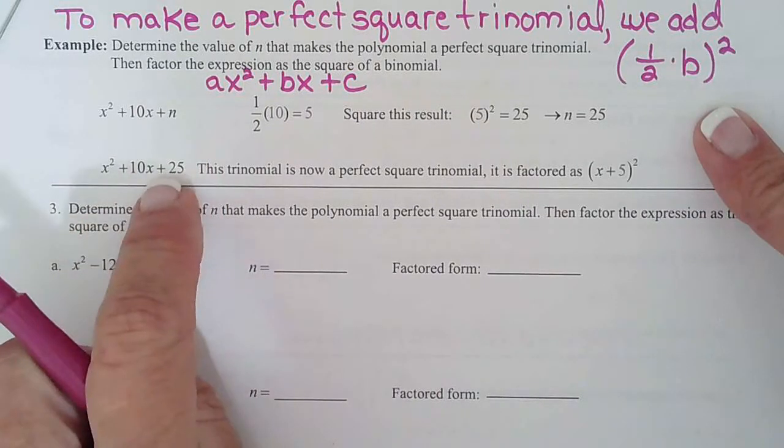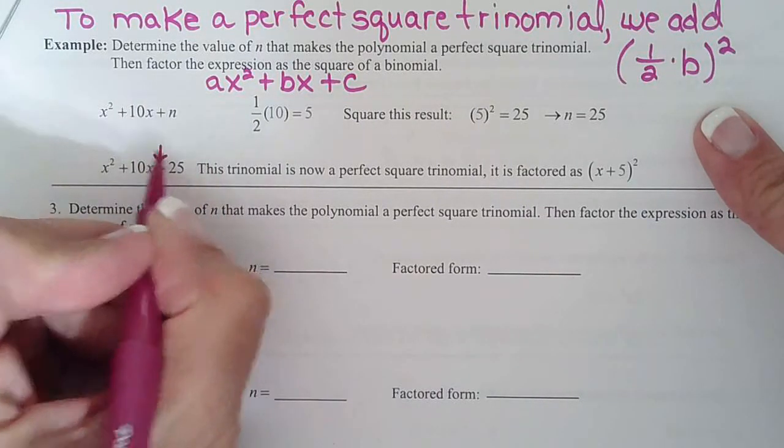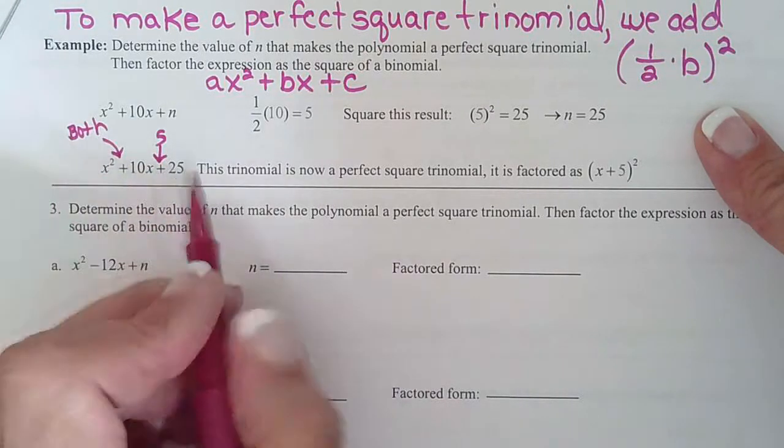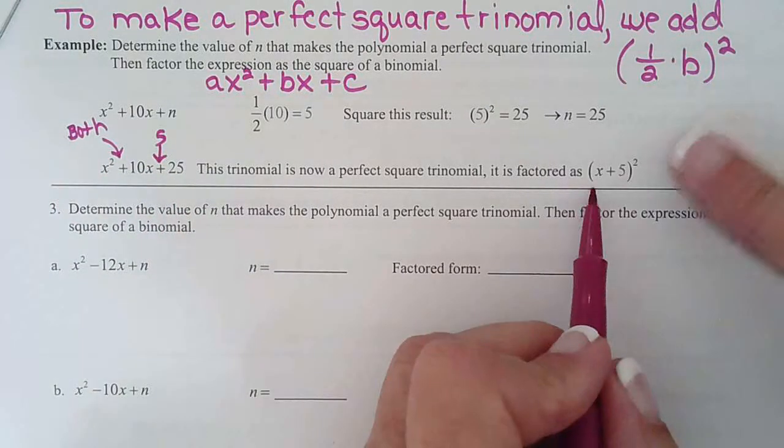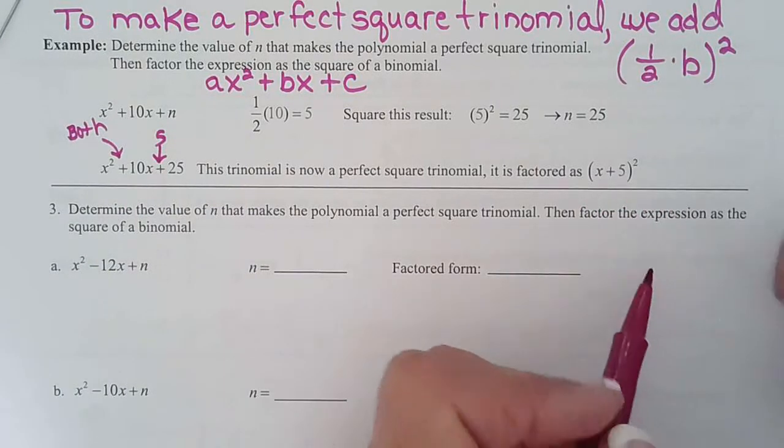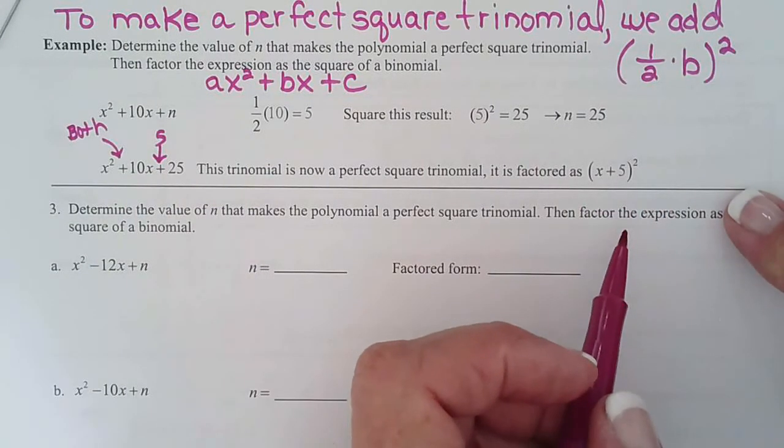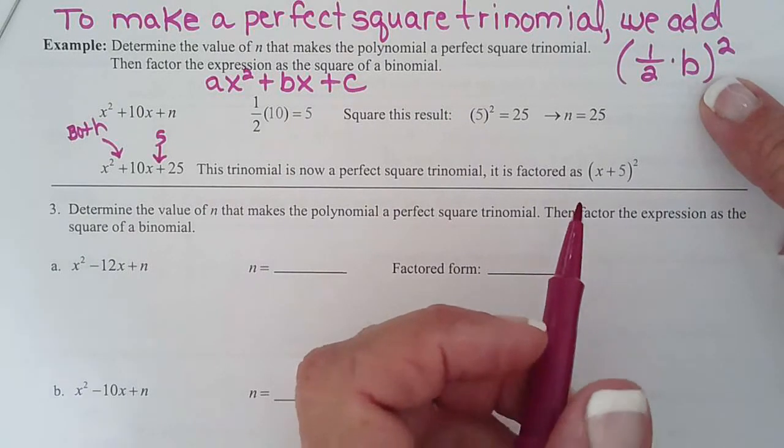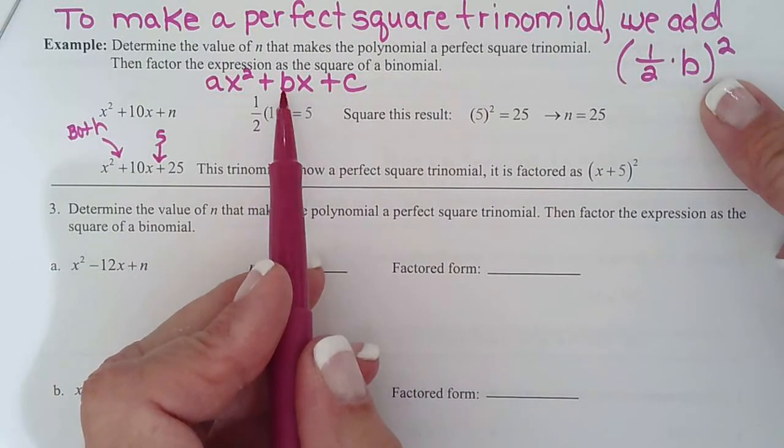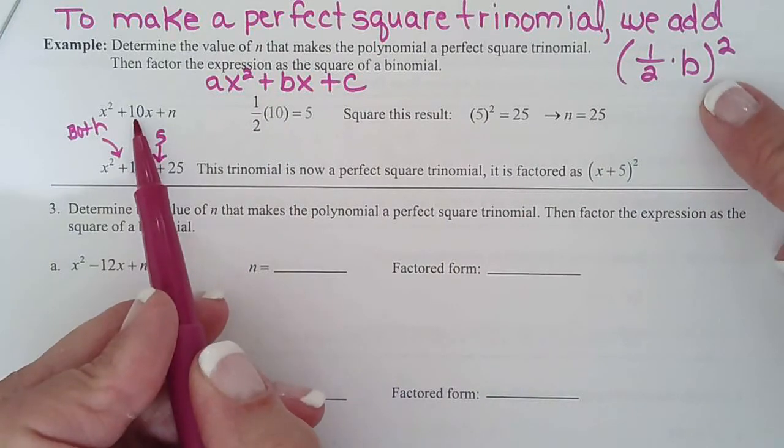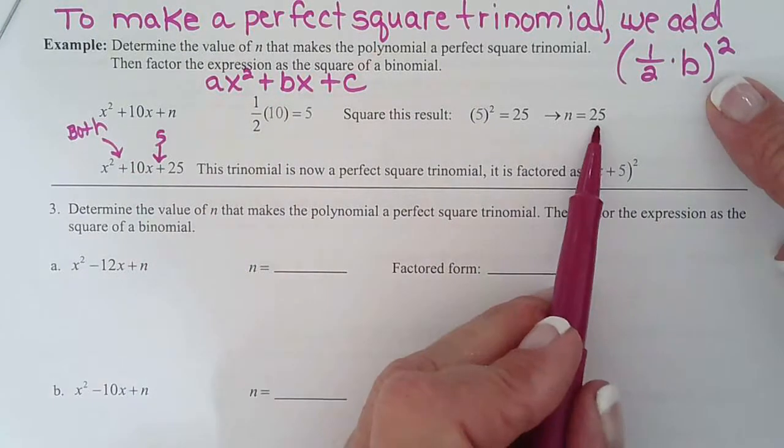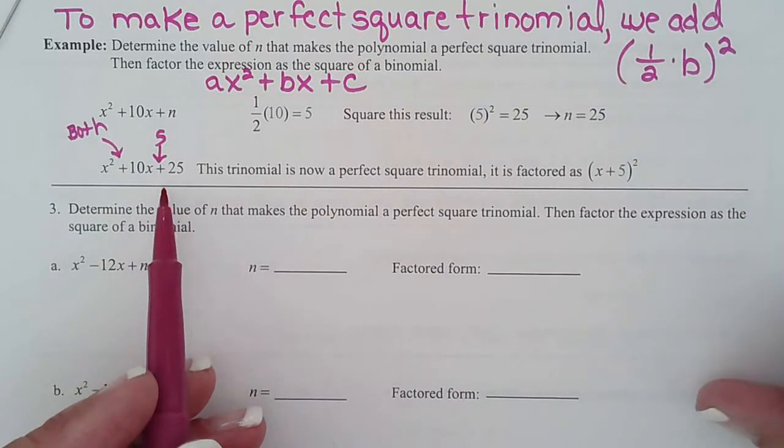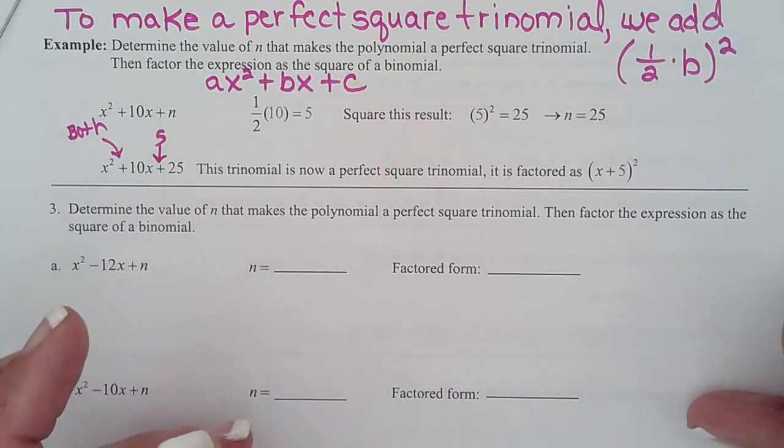Watch what happens. Signs the same, they're both positive. What are factors of 25 that add to 10? 5 and 5. x plus 5 squared. Boom. Perfect square trinomial. So by adding this constant on, half of whatever b is and then squaring it, so half of 10 is 5 squared is 25, we turn that into a perfect square trinomial, which we need for completing the square, which is coming up.